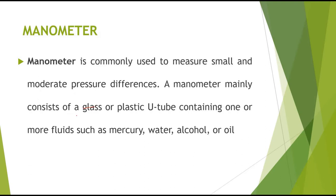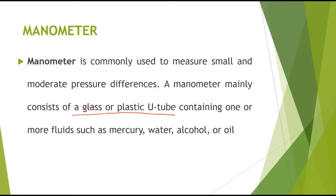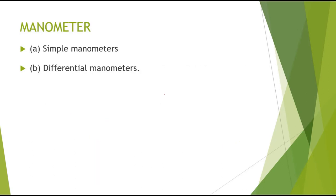Manometers are commonly used to measure small and moderate pressure differences. A manometer mainly consists of a glass or plastic tube containing one or more fluids such as mercury, water, alcohol, or oil. Manometers can be classified into simple manometers and differential manometers.